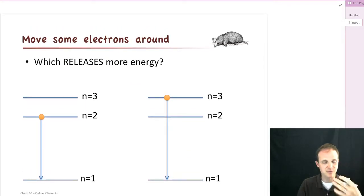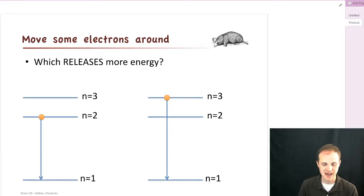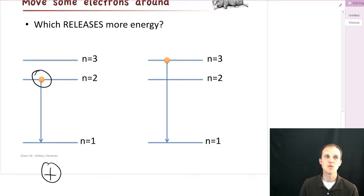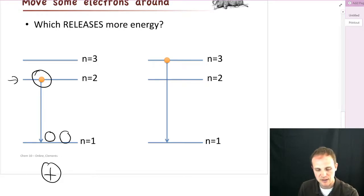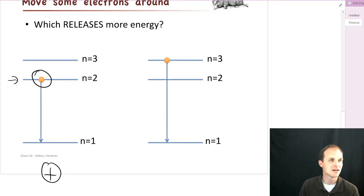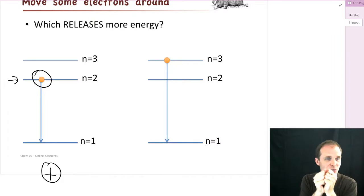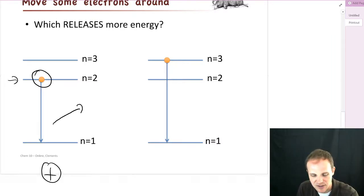So if electrons can go up from n equals 1 to n equals 2, can they go down from n equals 2 to n equals 1? And the answer is absolutely — in fact, they love to do that. If there's an electron up at n equals 2 and it sees the positively charged nucleus down below, it's going to want to be closer. The only reason electrons went into n equals 2 when we filled them in is because n equals 1 was already full. But if n equals 1 has space, this electron is going to be really happy to jump down there. And when it gets closer to that positive charge, energy comes out — in the form of light.